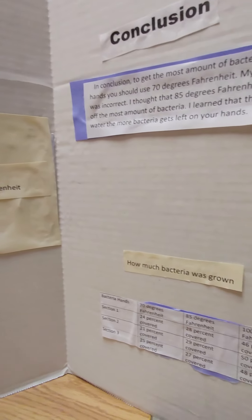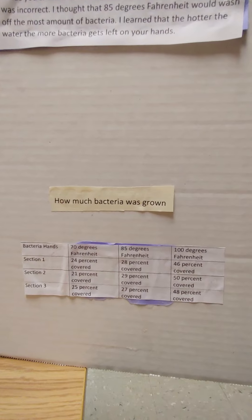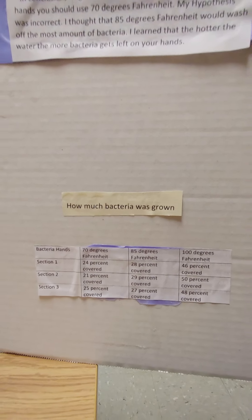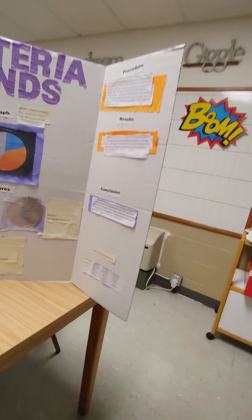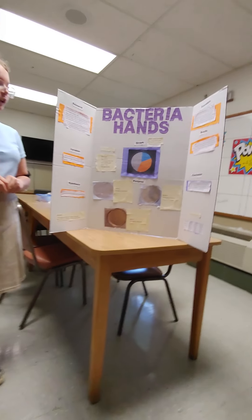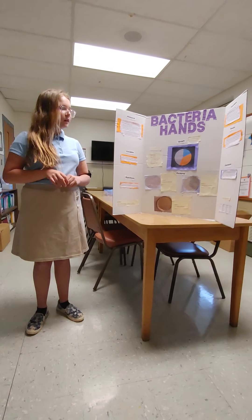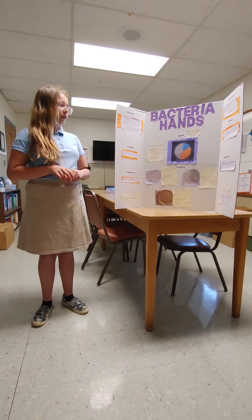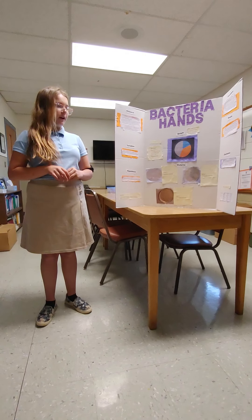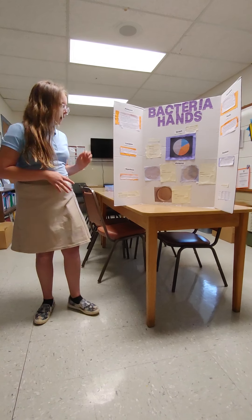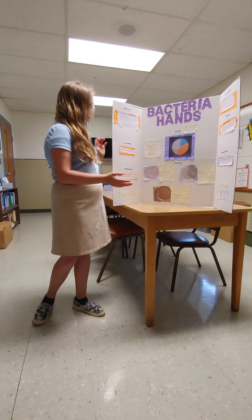In conclusion, to get the most amount of bacteria off your hands, you should use 70 degrees Fahrenheit. My hypothesis was incorrect — I thought that 85 degrees Fahrenheit would wash off the most amount of bacteria. I learned that the hotter the water, the more bacteria gets left on your hands.